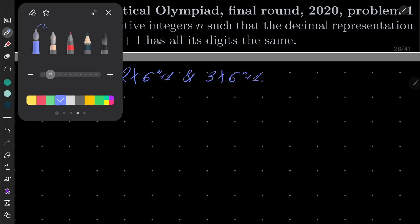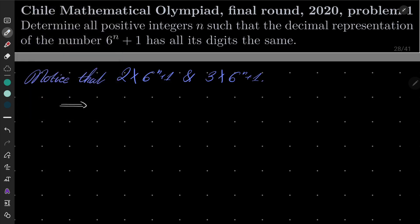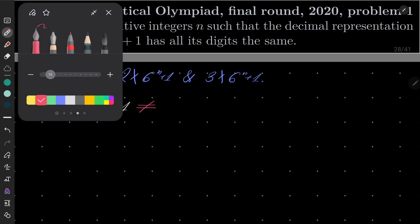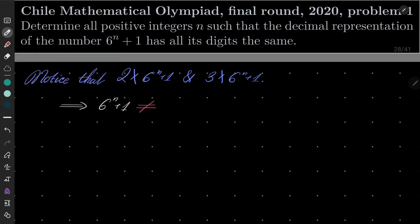That immediately implies that 6 to the power of n plus 1 cannot be equal to a number consisting only of digits 2, cannot consist only of 3's because this number is divisible by 3,